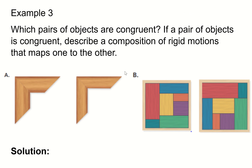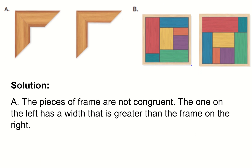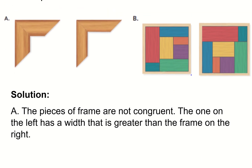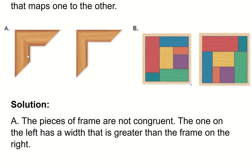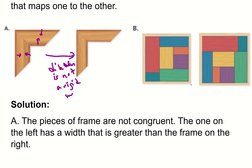Which pairs of objects are congruent? If a pair is congruent, describe a composition of rigid motions that maps one to the other. Looking at the first problem — two picture frame pieces — they're not the same size, so they are definitely not congruent. The only way to map one to the other would be a dilation, but a dilation is not a rigid motion because it changes the side lengths. So there's no way to use a rigid motion to get from one to the other.